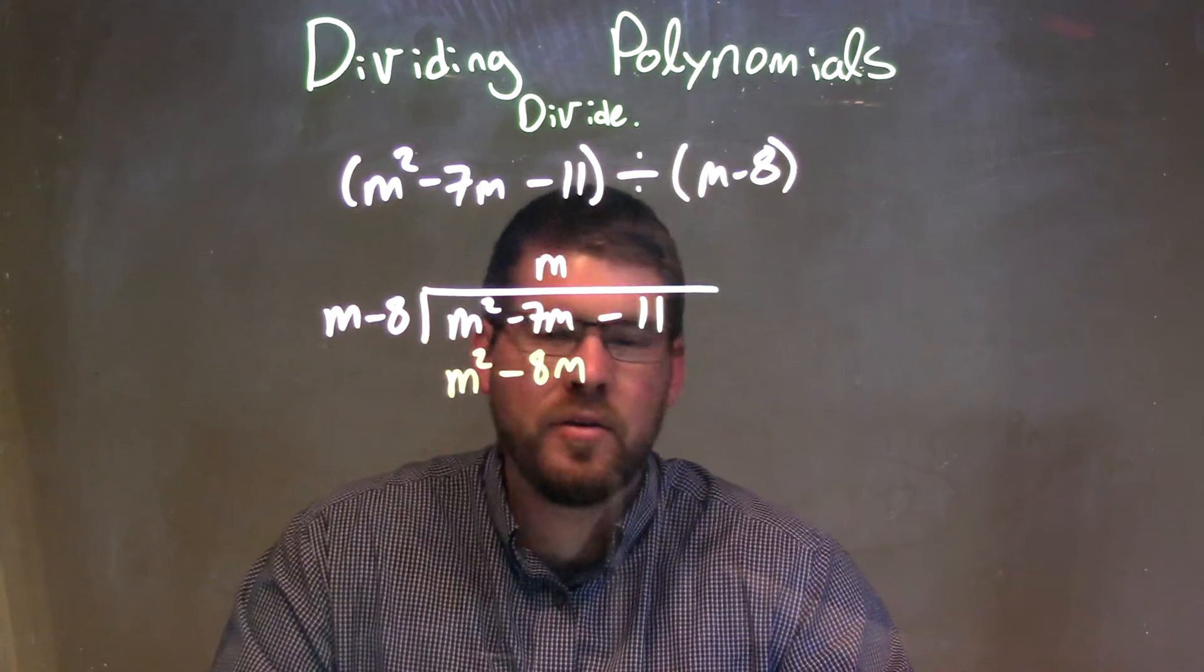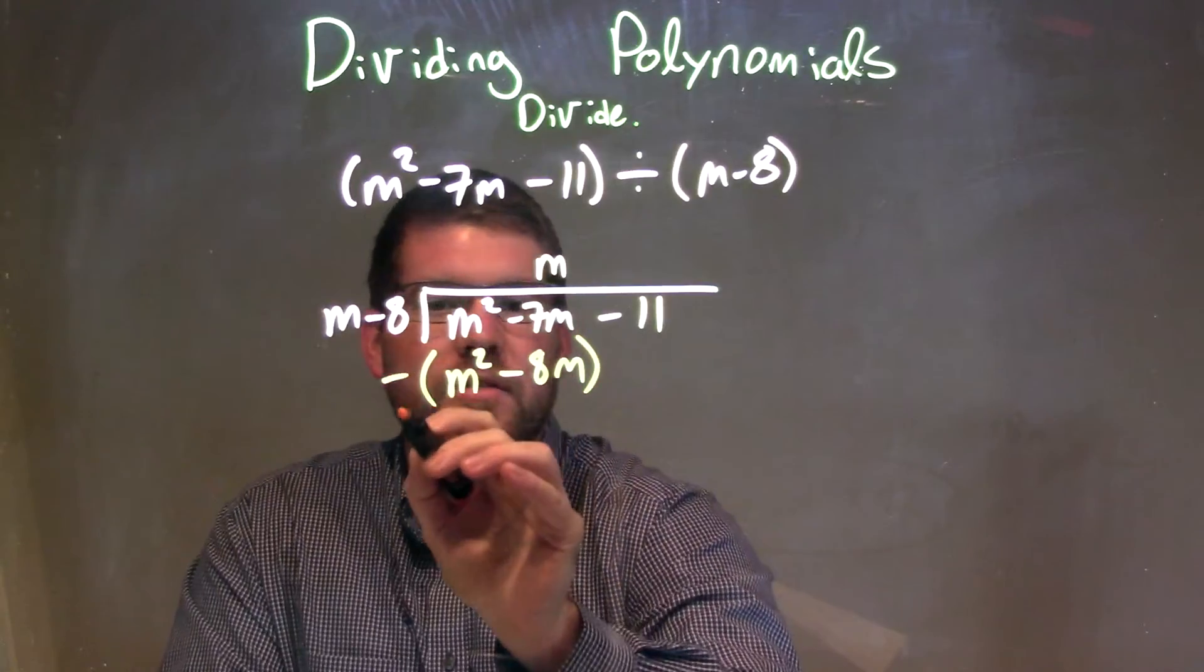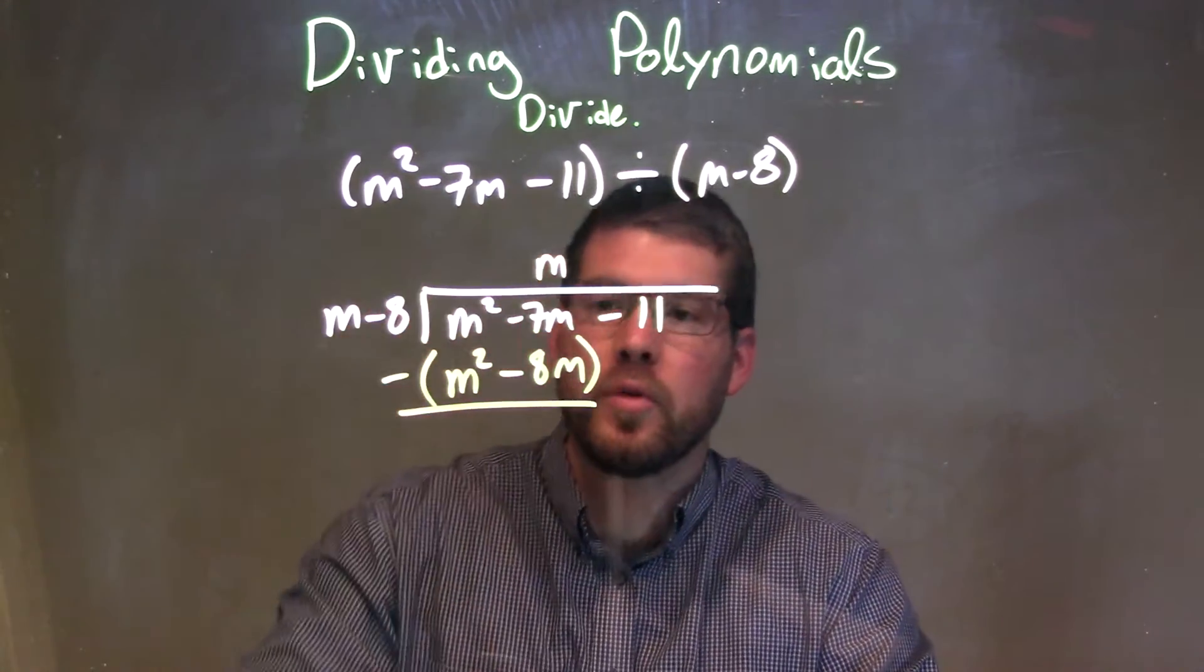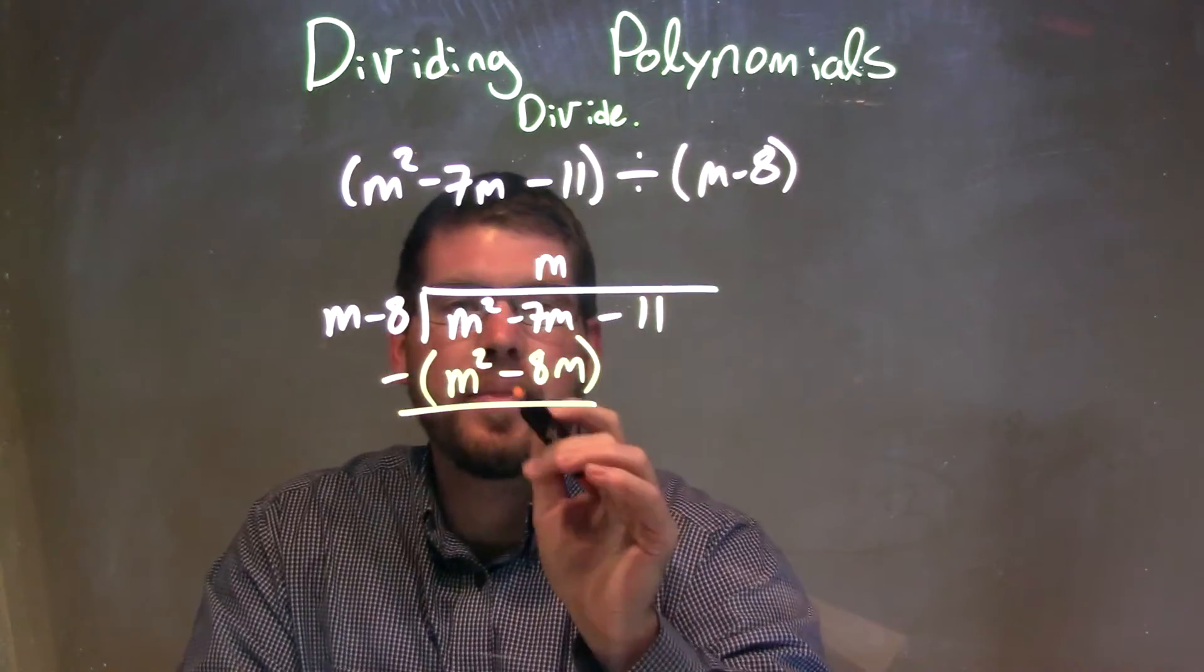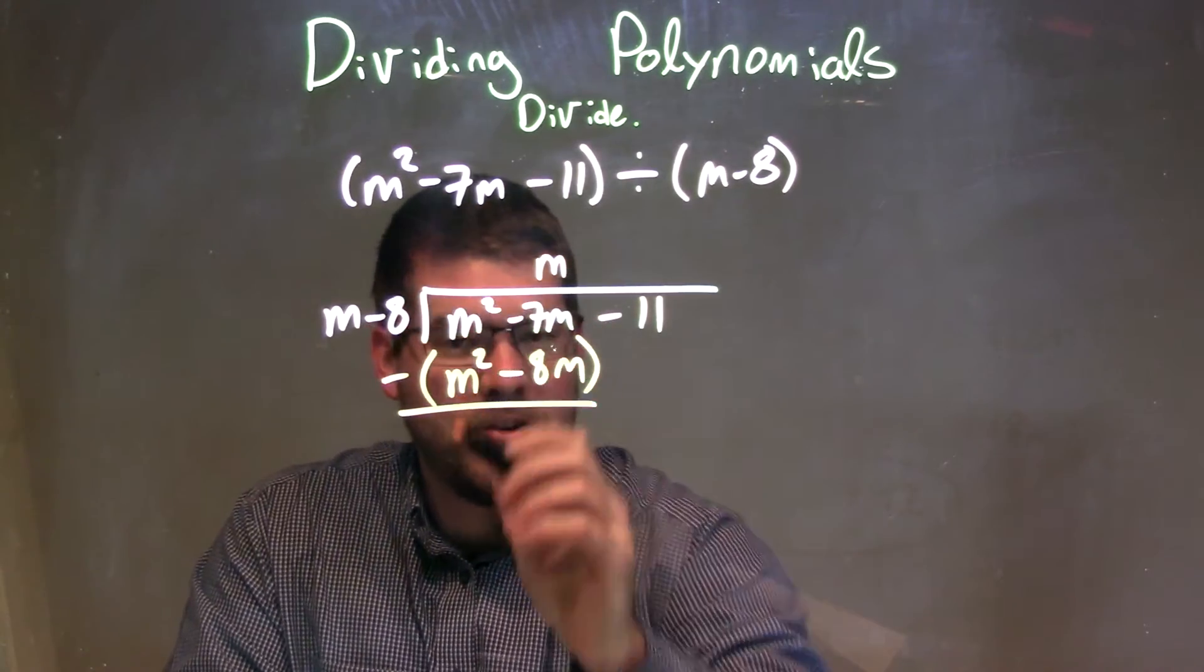Now we need to subtract this m squared minus 8m from our numerator, from the parts above it. m squared is easy, they eliminate. That was the whole point, they should eliminate.